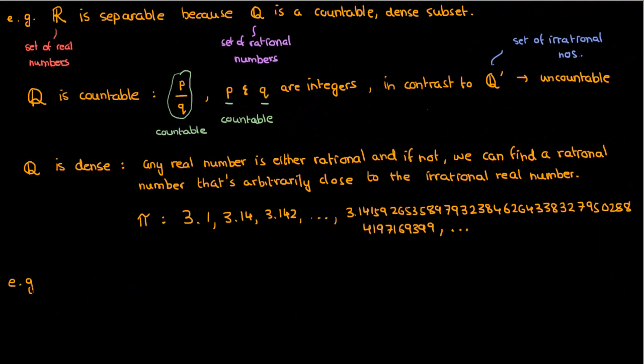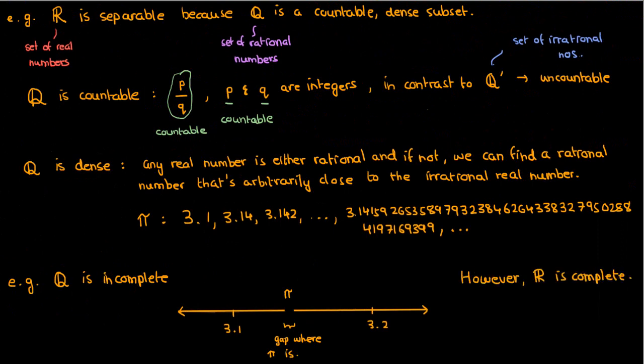For example, the set of rational numbers is incomplete, since there are gaps between the rational numbers that are occupied by irrational numbers. However, the set of real numbers, which consists of both rational and irrational numbers, is complete because it has no gaps.